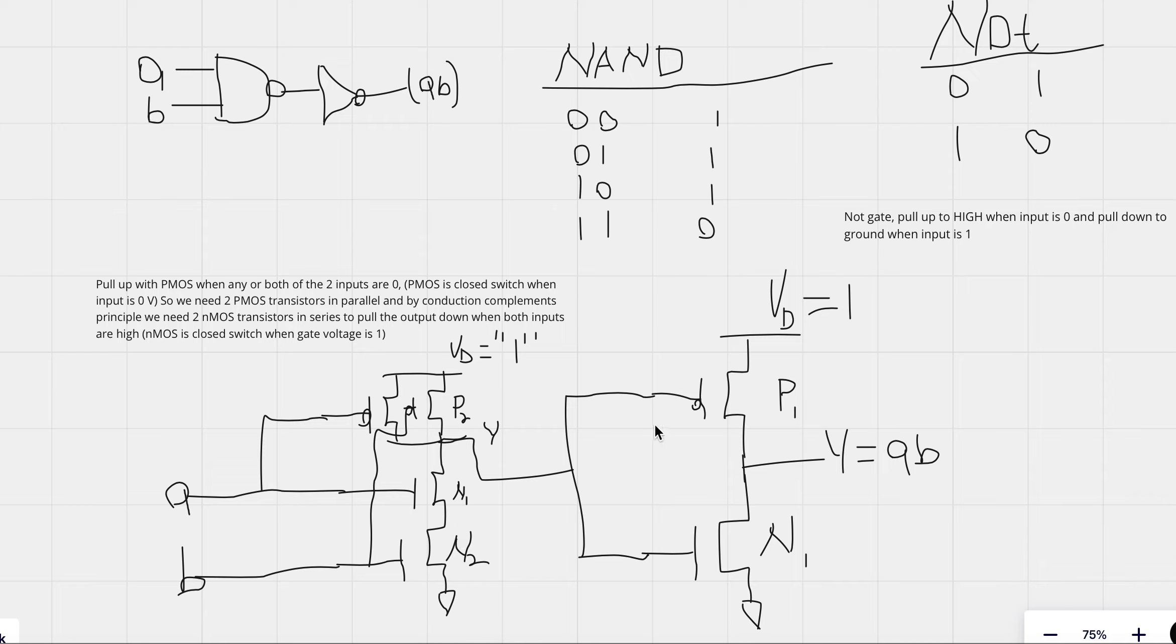Now when Y equals zero, Y is this first output right here, is fed to this. This PMOS has a zero. This NMOS has a zero. The NMOS will be off because the gate voltage is zero. So the PMOS will be on. The PMOS will then pull up, act like a closed switch. It will pull up this output Y equals A and B to one, which is what we want based on our truth table. When this input Y is zero, this output of this gate right here, this NOT gate, will be one.